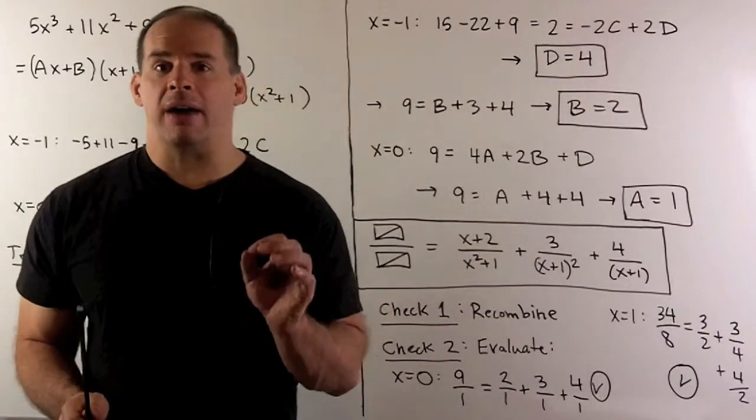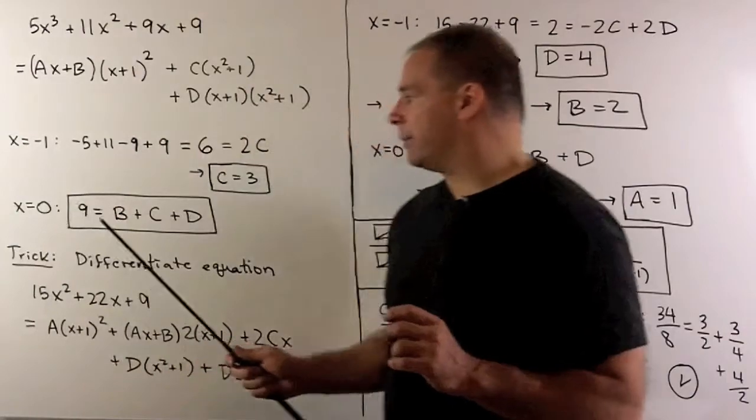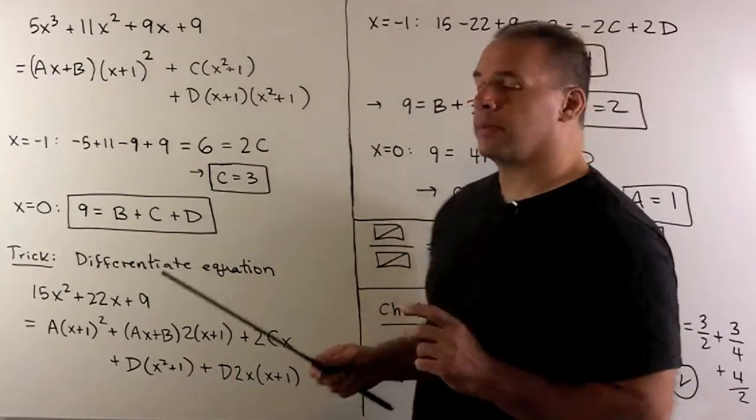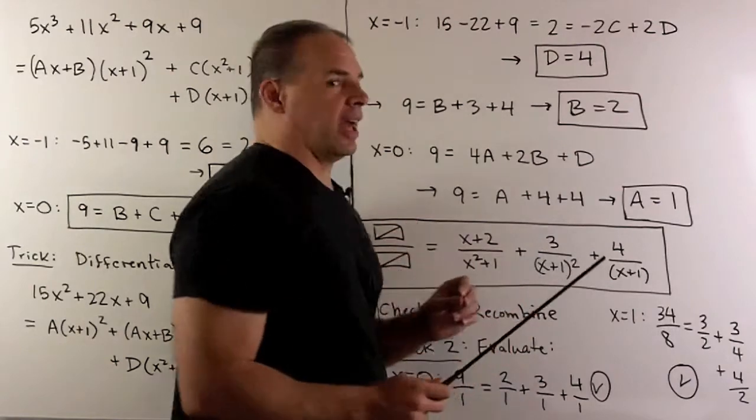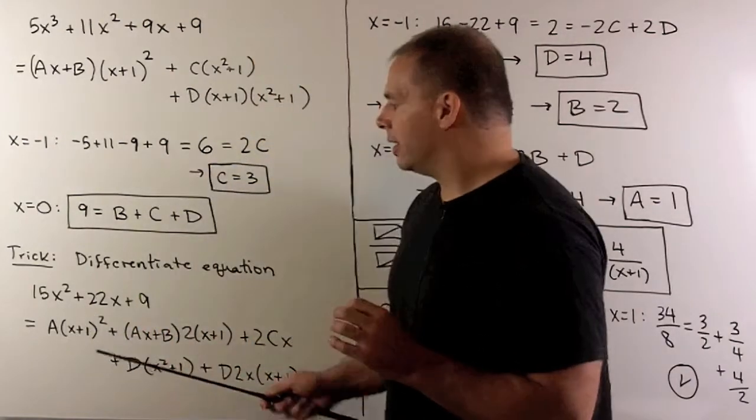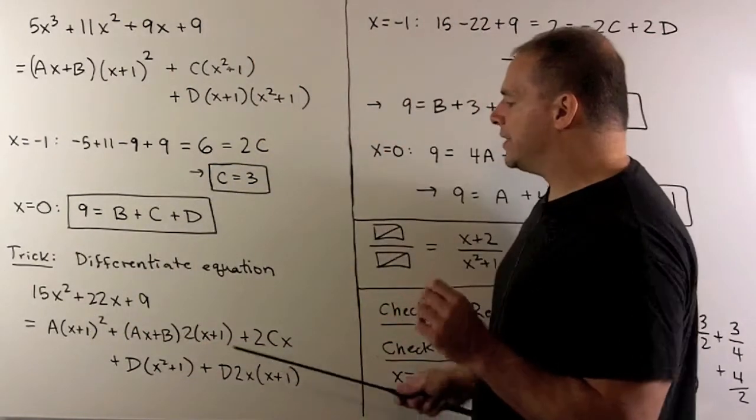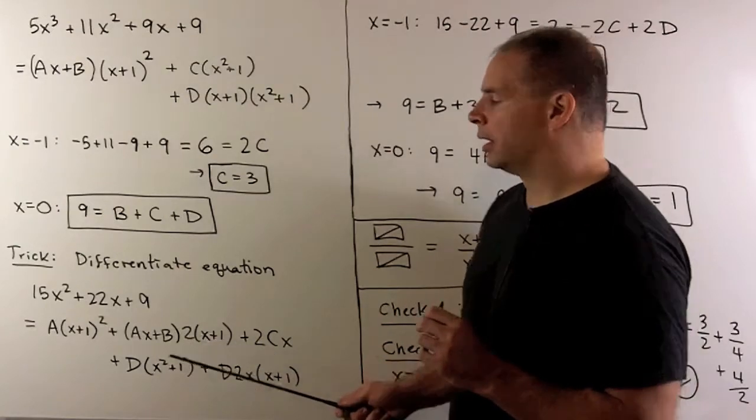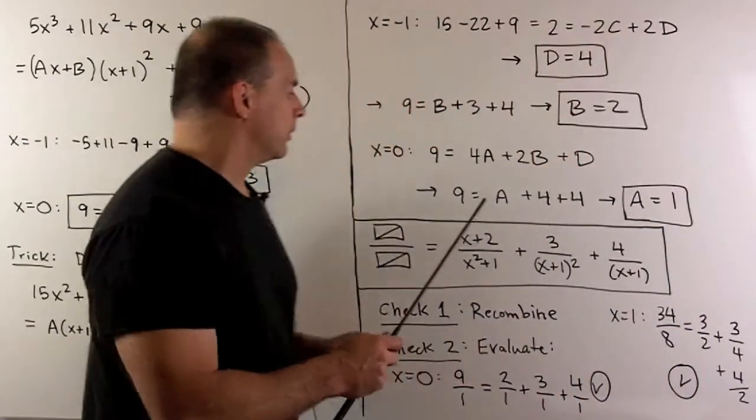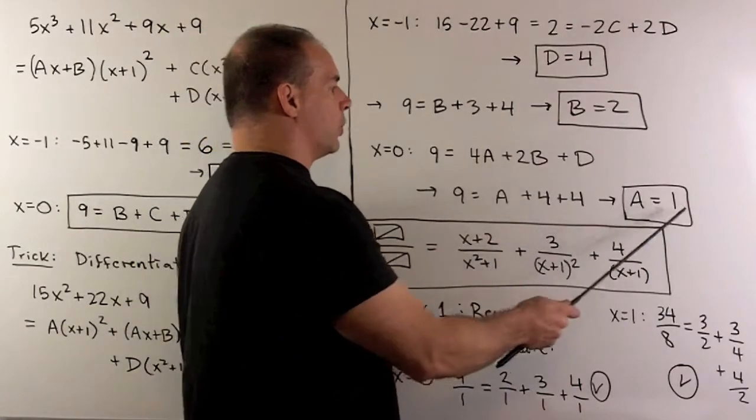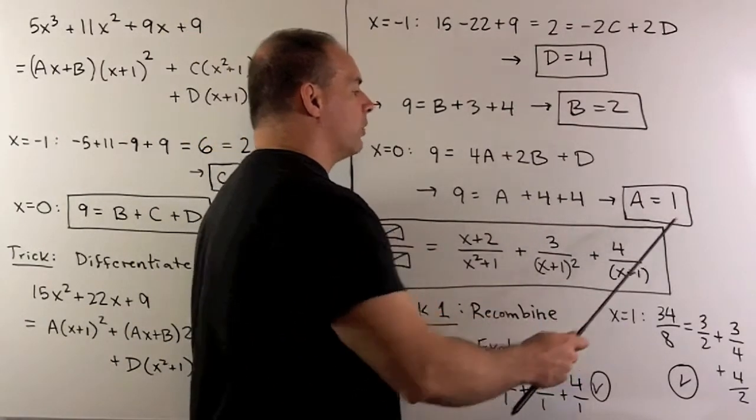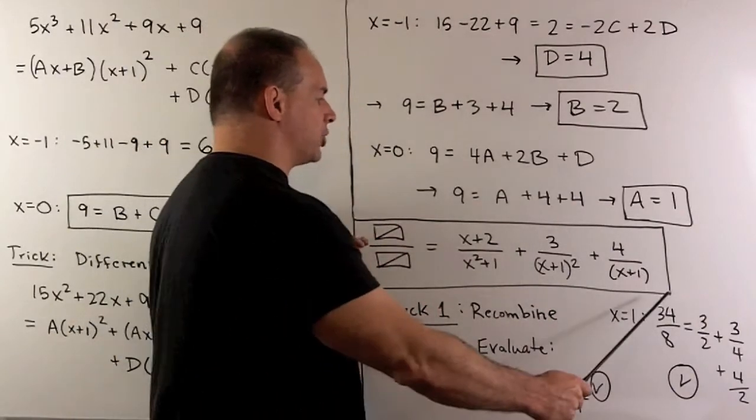Now we have c and d, so that means I can solve for b. We get b equal to 2. Then I just need to find a. We'll just take this equation here and we'll try 0 again. That gives me 9 equals a plus 4 plus 4, which gives me a equal to 1. And now we can write out our partial fraction expansion.